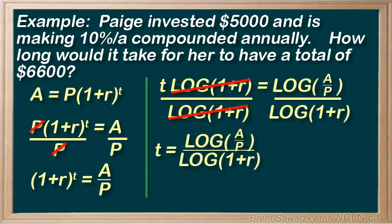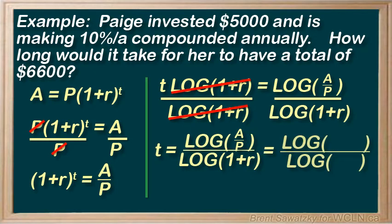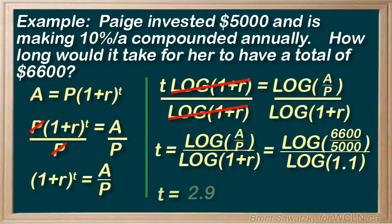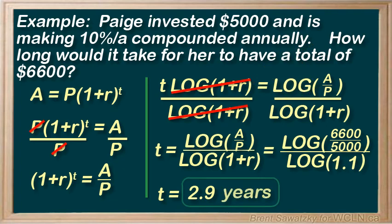There we go — the algebraic solution for t. We can now plug in our numbers: A over P is 6,600 over 5,000, and the rate is 0.1, so 1.1 is our base. We pull out our calculator and get 2.9. That's our number of compounding periods — and since we compound each year, our answer is 2.9 years.